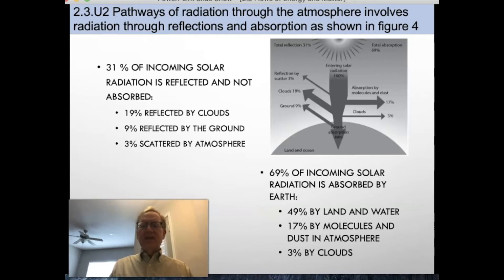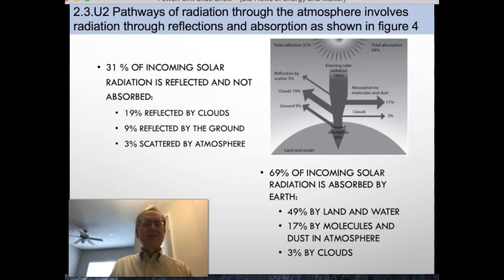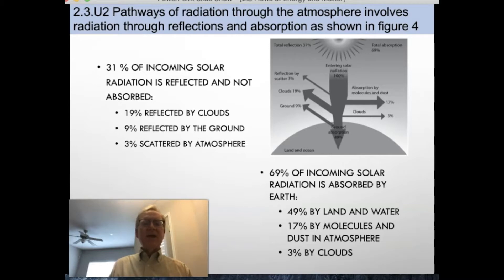About 90% of sunlight is reflected by clouds in the albedo, 9% reflected from the ground, and 3% scattered by the atmosphere. 69% of the incoming solar radiation is absorbed by the Earth: 94% by land and water, 17% by molecules, and 3% by clouds. The light that reaches the leaf may be reflected from the surface or passed through without being captured. Chlorophyll only captures certain wavelengths of light for photosynthesis — green reflects, while red and blue are absorbed. Photosynthesis has inbuilt inefficiencies limited by temperature and carbon dioxide concentrations. Measurements show that less than 0.05% of light energy falling on the Earth is captured by plants and converted into biomass.